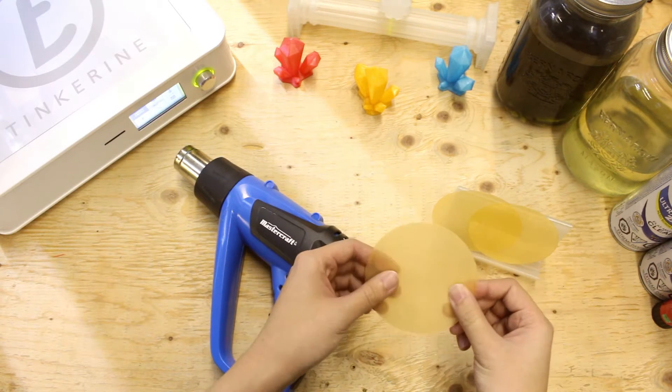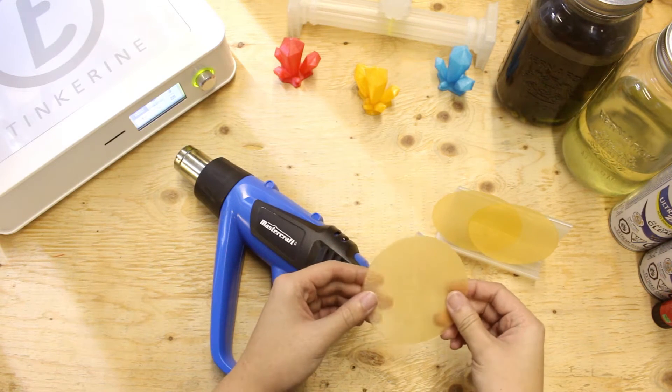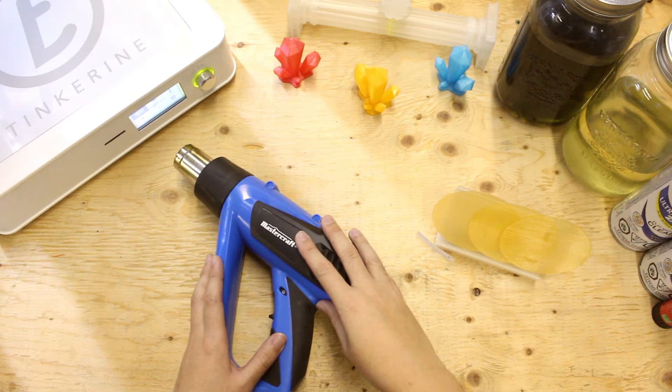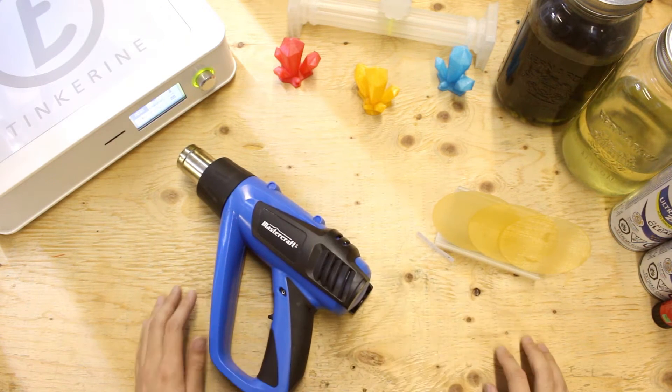Welcome to another episode of Tinkerine Experiments. Today we are going to try heat forming PLA with a heat gun. We saw a video online and we just wanted to try it out ourselves.